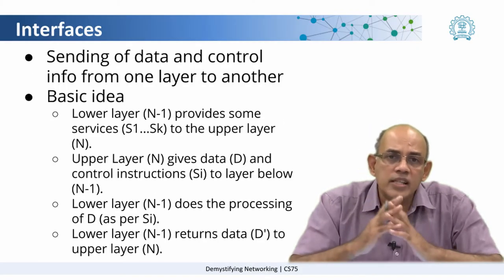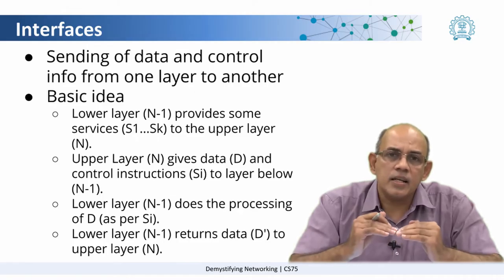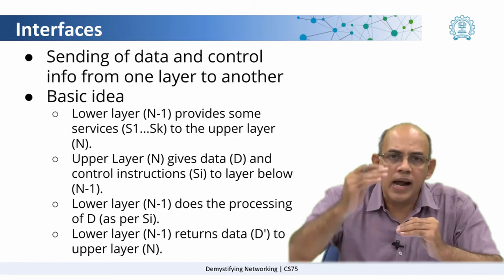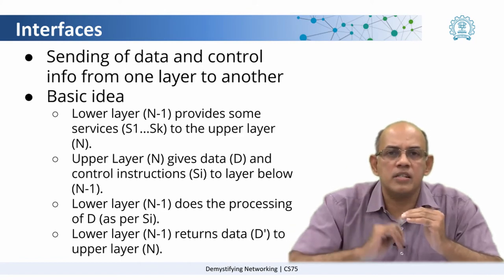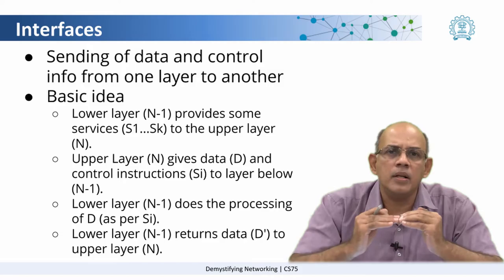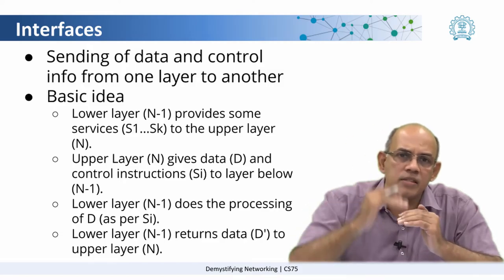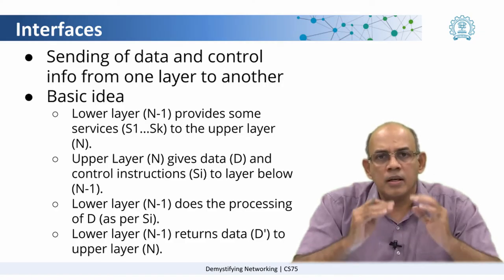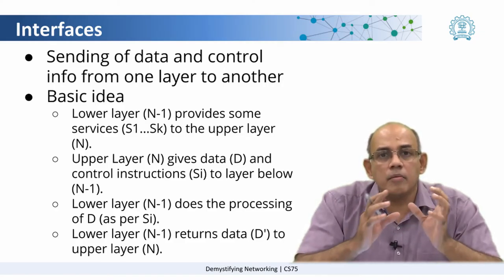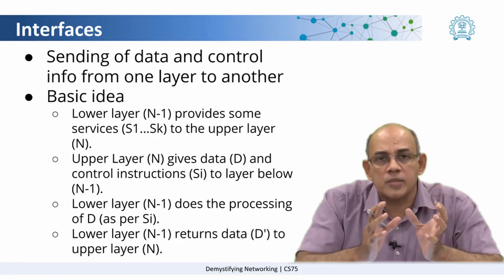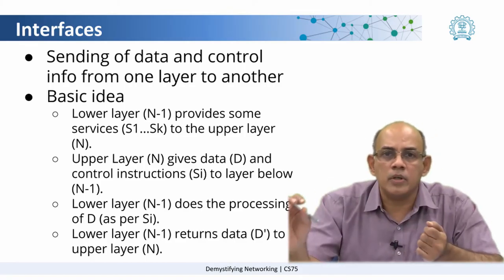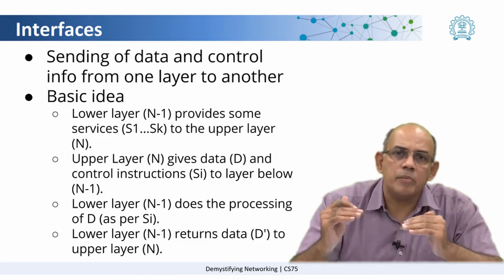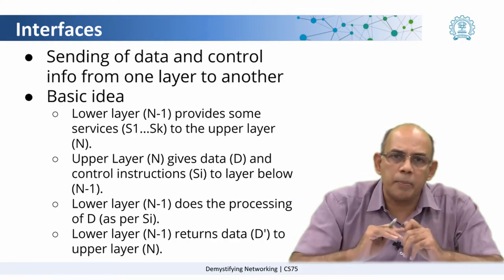Now, how do these layers work? The basic idea is that each layer provides a service to the layer above and it utilizes the services of the layer below. For example, the application layer gives some data and some address to the transport layer. This information is the transport layer's responsibility to communicate from one end of the network to the other end of the network. At the other end, again this information is reassembled and sent back to the application layer.